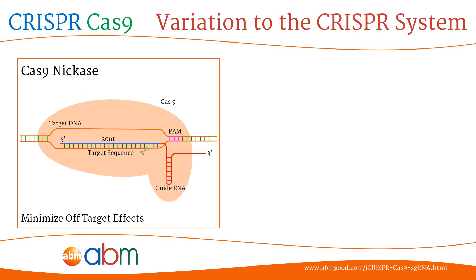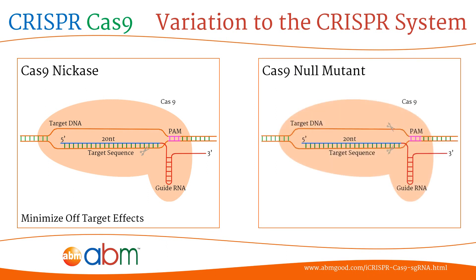And third, the Cas9 null mutant, where both of the nuclease domains are inactivated. However, it still retains its ability to bind to DNA based on gRNA specificity.